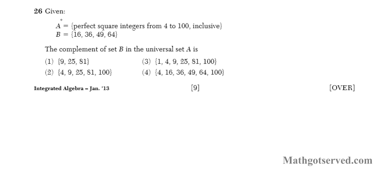Let's take a look at question number 26. It says given the two sets, A is the perfect square integers from 4 to 100 inclusive and B is 16, 36, 49 and 64. The complement of set B in the universal set A is, well, so first of all how about we have a better idea as to what the elements of set A are so we can actually compute what the complement of set B is in the universal set A.